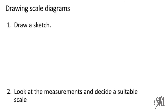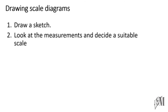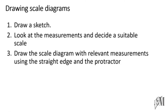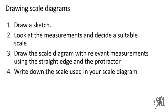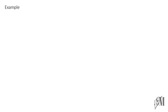The second step is to look at the measurements and decide a suitable scale — you have to think carefully about a very suitable scale. The third step is to draw the scale diagram with the relevant measurements using your straight edge and protractor according to the scale you decided. The final step is to write the scale of the diagram as a ratio, as you have learned in smaller grades.